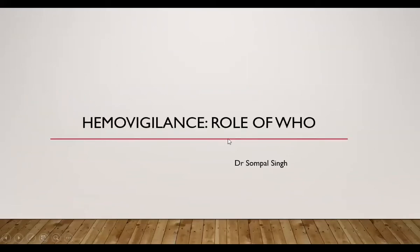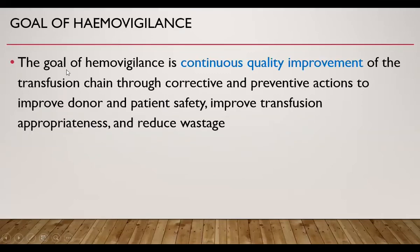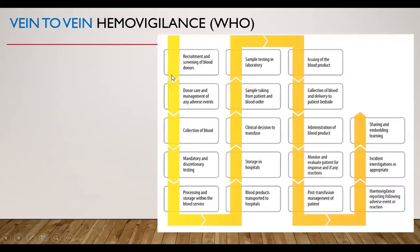Now, what is the role of WHO in Hemovigilance? According to WHO, the goal of Hemovigilance is continuous quality improvement of the transfusion chain through corrective and preventive actions to improve donor and patient safety, to improve transfusion appropriateness, and to reduce wastage. According to WHO, Hemovigilance covers the entire transfusion chain — it is from vein to vein.